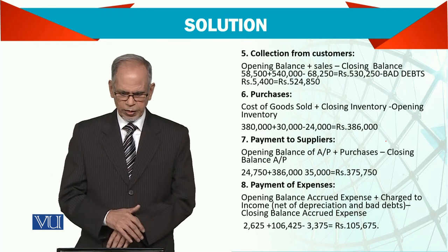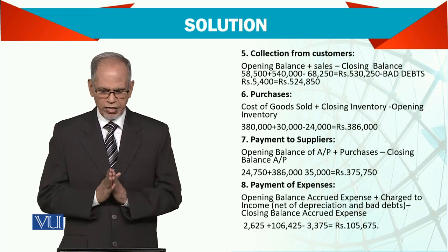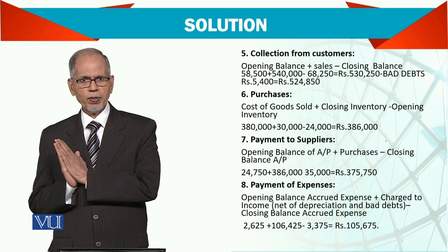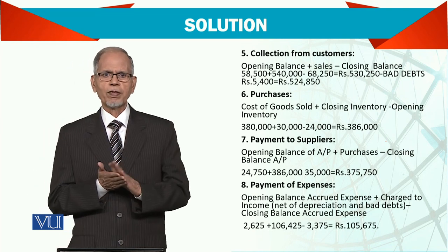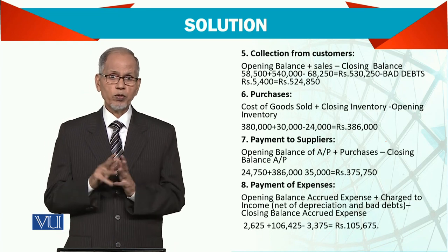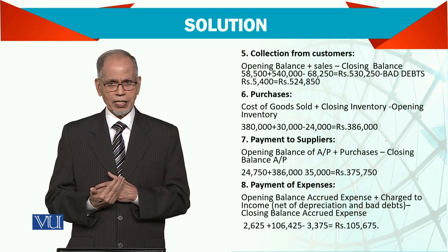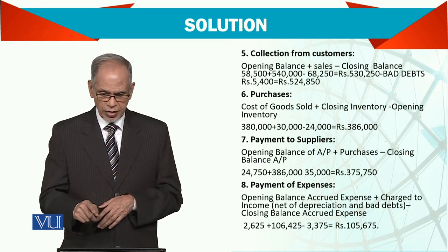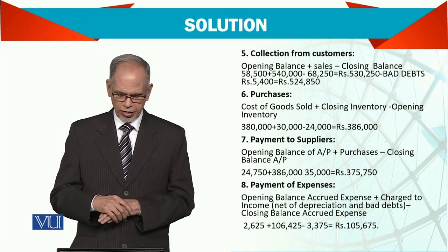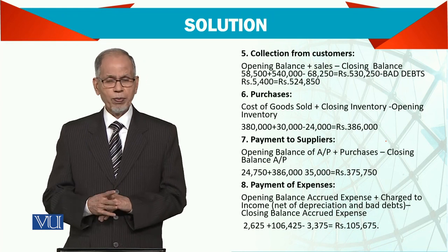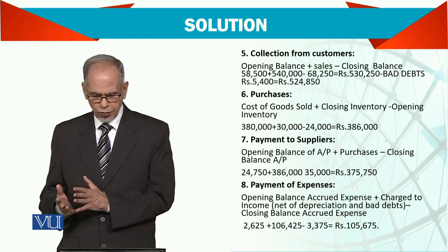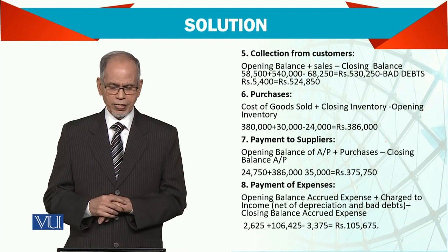Collection from customers — this is for the direct method. You need to find out how much was collected from the customer. The formula: receivables opening plus sales minus closing receivables. Similarly, for purchases — you need to find out the purchases first. Cost of goods sold plus closing inventory minus opening inventory gives you the purchases figure. Then payment to supplier: opening accounts payable plus purchases minus closing accounts payable gives the balance paid to the supplier.